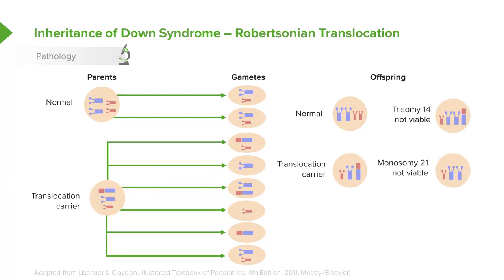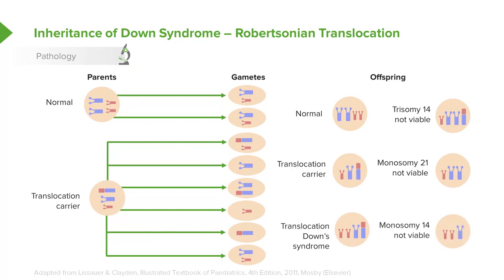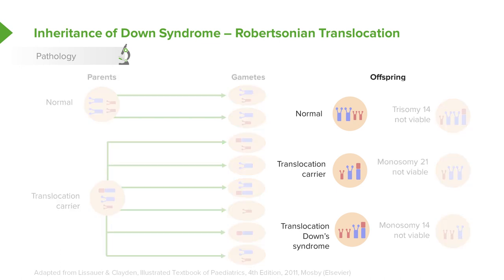They could also create a translocation such that the child has Down syndrome — essentially three copies of the 21st chromosome, with one adhered to chromosome 14. Or they could create monosome 14, which is also not viable. So essentially, the odds for this couple are: a normal child, a child who is a translocation carrier at risk for similar outcomes in the next generation, or a child with Down syndrome.